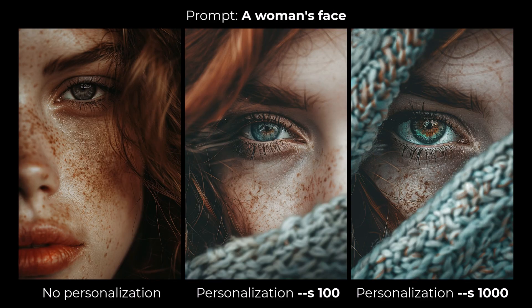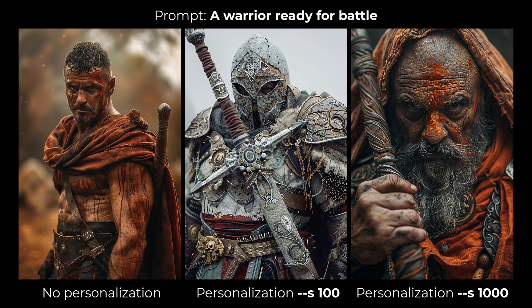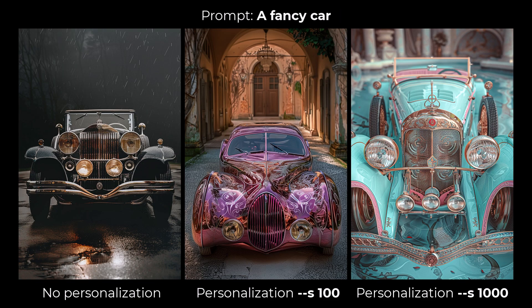In the image of a woman's face, we've got her face, then something covering it slightly in the middle, and on the third one being covered up completely — showing that I seem to like images in front of faces for some reason. For the warrior ready for battle, we've gone from a fully armored warrior to a completely different type, and then back to a more tribal style — you can definitely see the difference. And for a fancy car, we've got a standard car on the left, something pink and a little crazy in the middle, and then completely off the charts on the right with a really bright aqua-esque style.